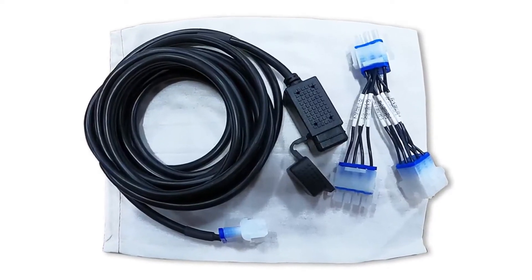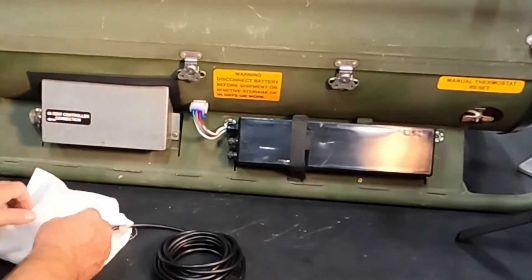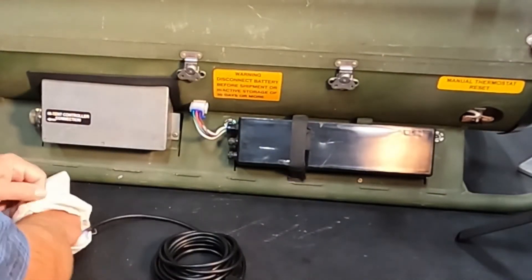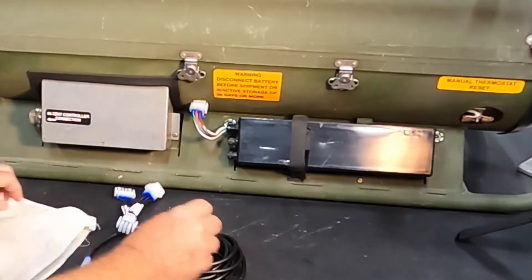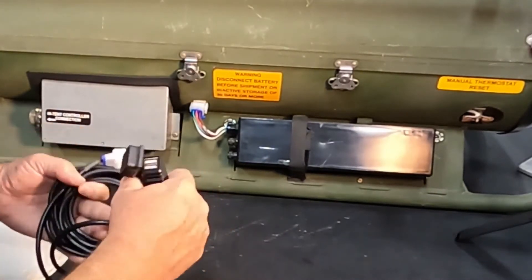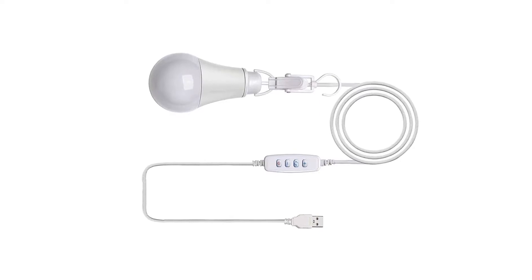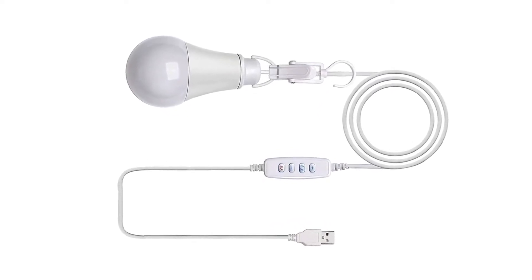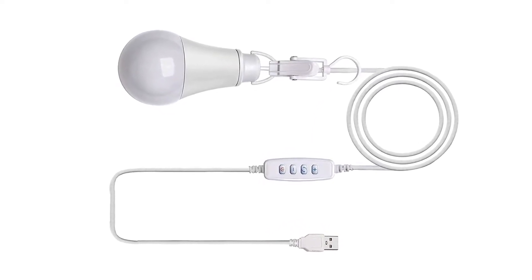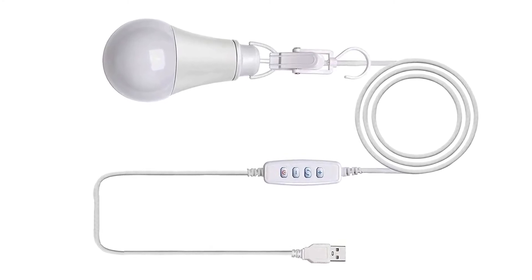Introducing the USB device charger, UDC. The UDC utilizes power generated by the SHC to charge mobile devices, up to two at a time — smartphones, tablets, any device that uses a USB port to charge. You can even use it to power commercially available USB devices such as LED lights. Now you can have heat and lighting without bringing a generator.